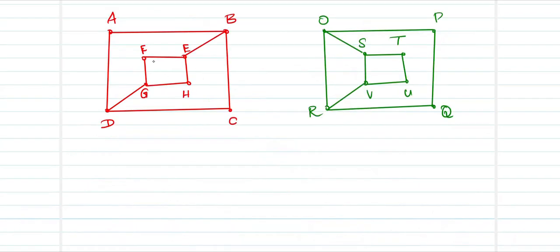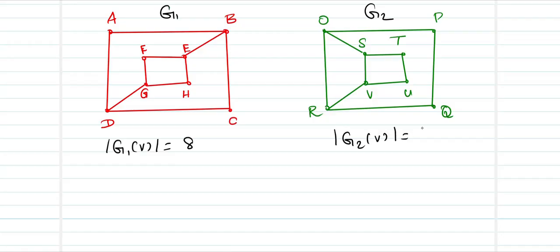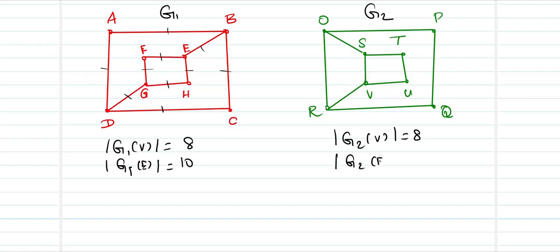Now let us conclude with the last problem. We have G1 and G2, each with 8 vertices. G1 has 10 edges and G2 also has 10 edges.